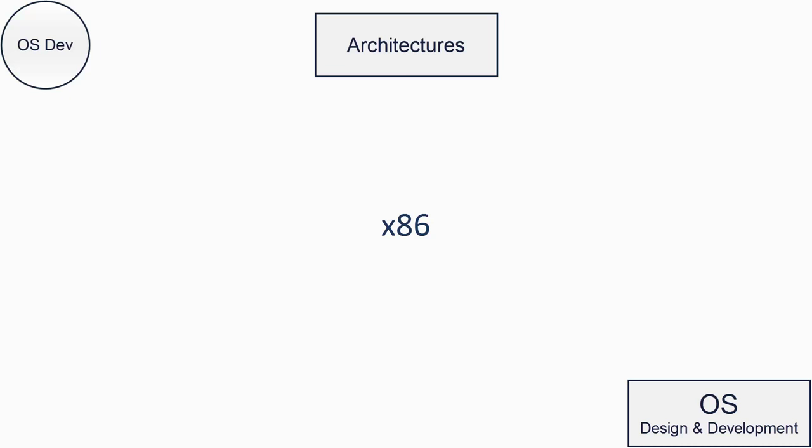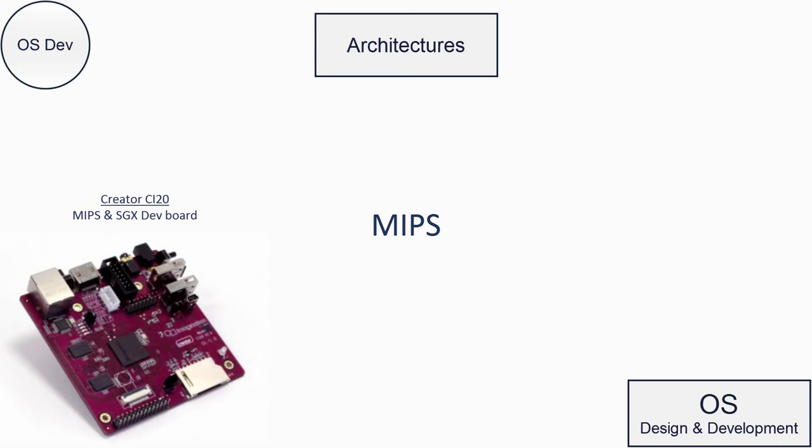x86 processors are in the vast majority of PCs and laptops around the world. If you're running Windows, you're almost certainly running x86, so you won't need to worry about this too much. If you're interested in writing an operating system for MIPS, Fling OS also has online tutorials for that in the form of articles. If you head over to the docs website, you'll find them there.